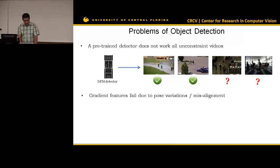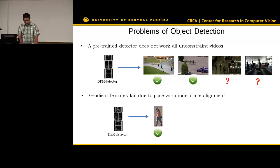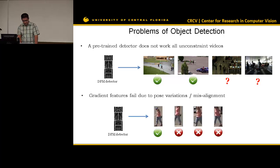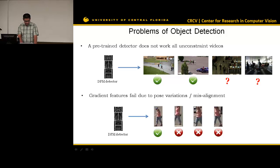Another problem is that the gradient feature will fail due to pose variations and misalignment. We use the DPM detector to detect a person — if the pose is normal, it is good, but if there are pose variations and misalignment of the sliding windows, it will fail. Regarding these problems, we propose our solution.